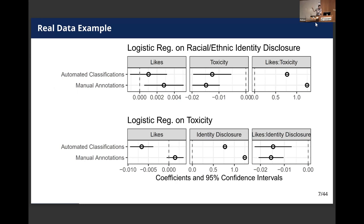Here are the results. On the top, we have racial or ethnic identity disclosure as the outcome and use automatic classifications. We don't observe a statistically significant coefficient for likes onto automatic classifications, but you do observe one when you have manual annotations. So in this case we have a type 2 error — an analyst might reach a conclusion that there was no relationship when they would have found one with higher quality data. In the second example, we have toxicity as the outcome, showing the problem affects both cases where toxicity is the outcome or the predictor. In this case we've got a type 1 error: automated classifications would have you believe there was a negative relationship, while manual annotations would have you believe there was no relationship. It's a toy example to get small effect sizes in a large dataset with a pretty accurate classifier, but this is not too unusual.